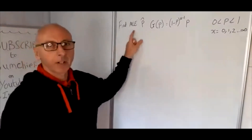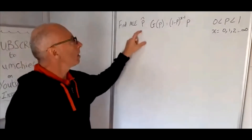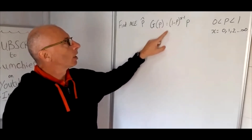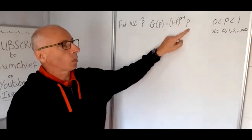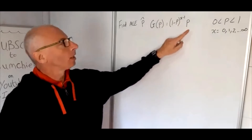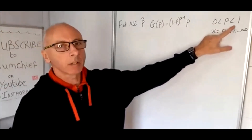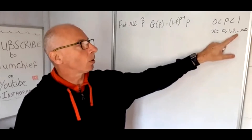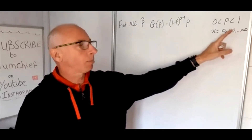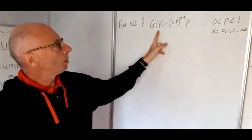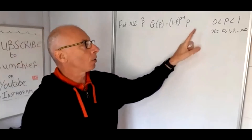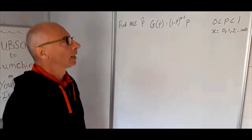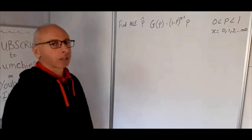I've got a question here: find the maximum likelihood estimate for the parameter P in the geometric distribution — 1 minus P to the X minus 1, times P — where P is a probability between 0 and 1, and X takes positive whole numbers. The geometric distribution is a discrete distribution, so we get whole numbers, not values like one and a half, which would be continuous data.